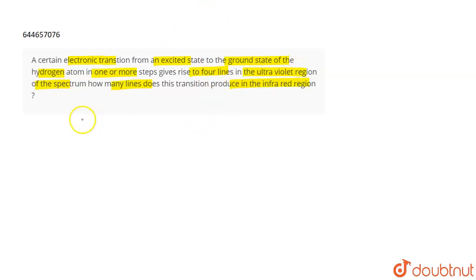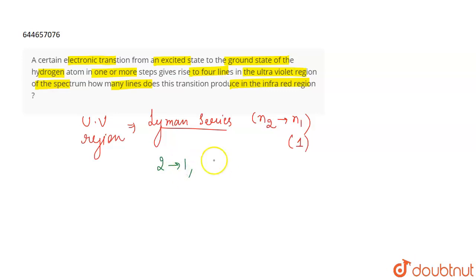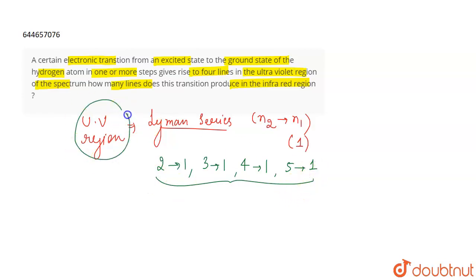If we talk about transitions in the ultraviolet region, the Lyman series lies in the ultraviolet region. In the Lyman series, the transition takes place from N2 to N1, meaning from a higher energy level to a lower energy level. For the Lyman series, N1 is fixed at 1. So the four lines of transition are 2→1 (first line), 3→1 (second line), 4→1 (third line), and 5→1 (fourth line). These are the four lines in the Lyman series, which is in the UV region.